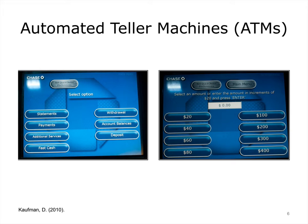For example, if you click on Withdrawal, a screen will present itself with common withdrawal amounts, as well as a text box that will allow you to key in a particular amount. A test of a mental model is whether we can use an ATM from another bank that may offer a very different screen layout or require a different interaction sequence. For the most part, it isn't all that difficult to make that transfer. It may trip you up from time to time, but we understand the behavior of such systems well enough that we can negotiate any such problems.